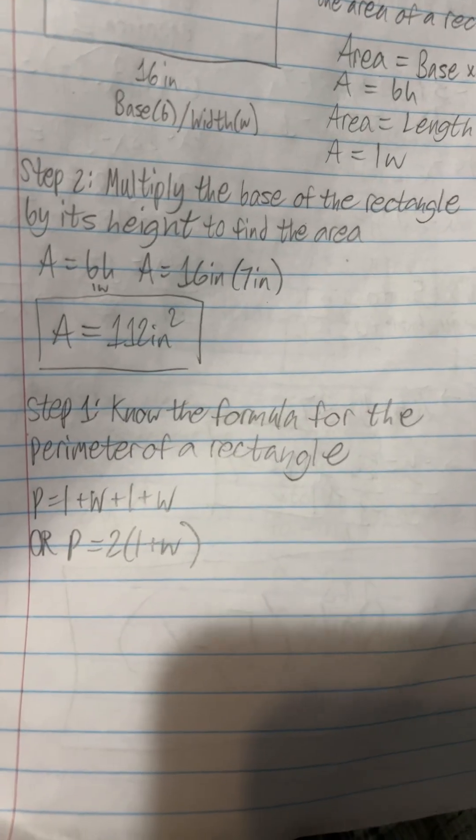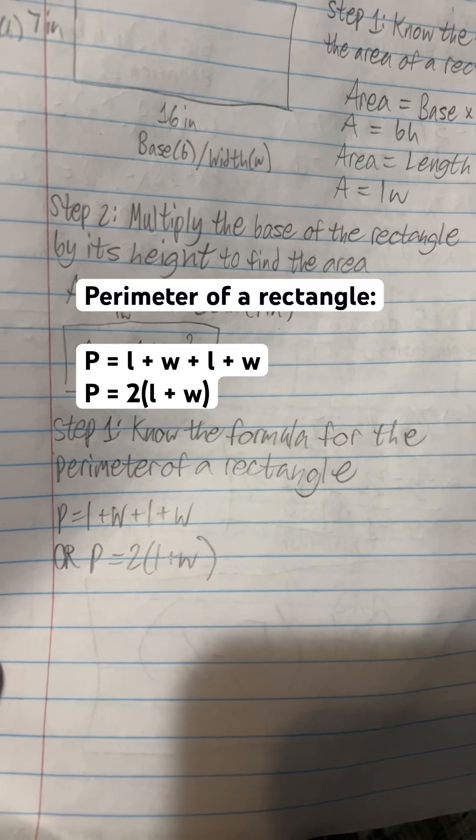All right, I won't go find the perimeter at first, but since we didn't find the area, we might as well go ahead and find the perimeter. Step one to find the perimeter of a rectangle is knowing the formula for the perimeter of a rectangle.